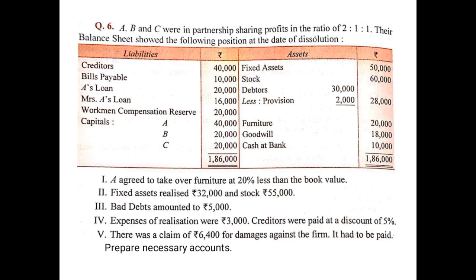Then A's loan — A is a partner of the firm, so any loan of the partner will not be transferred to the realization account. Rather, a separate account has to be prepared. We will prepare A's loan account separately. Since this loan amount of 20,000 is given on the liability side, it is a liability. So 20,000 will be shown on the credit side of A's loan account as: by balance brought down 20,000.